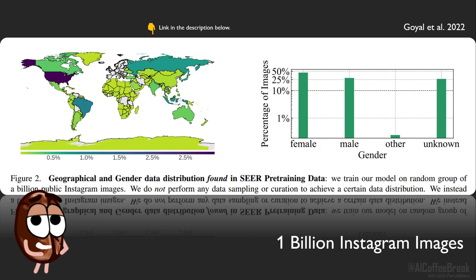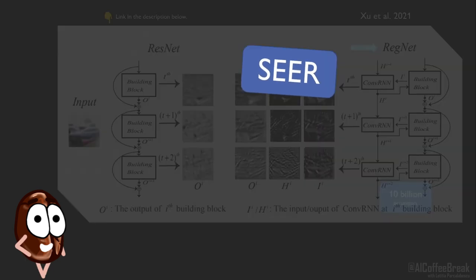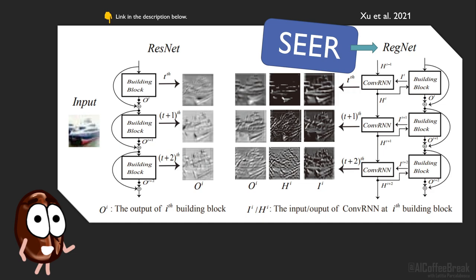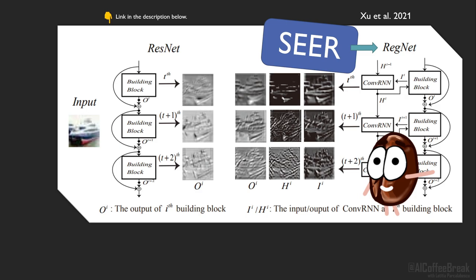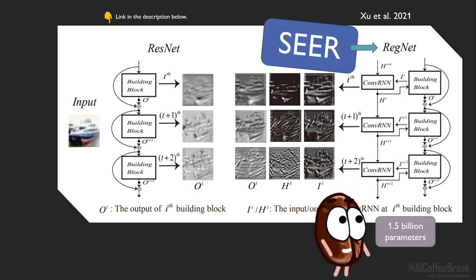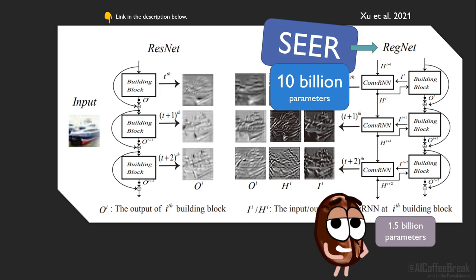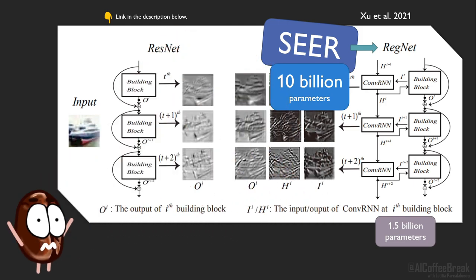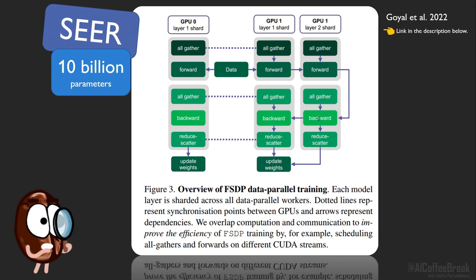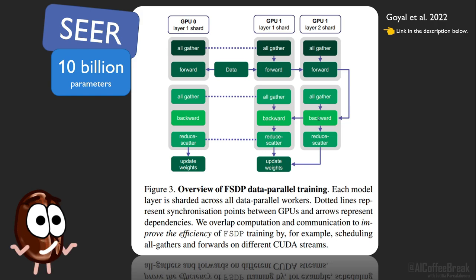The authors decided to ditch dataset curation and still hope for fairness. They trained a model called SEER, which is just a RegNet architecture. RegNet is a variant of the well-known ResNet, where the residual connections are regulated by a recurrent neural network. The previous biggest model in the RegNet family was only 1.5 billion parameters. To not underfit the data, the model size should match or surpass the dataset size, so the authors scaled up the RegNet to make SEER — a RegNet model scaled to 10 billion parameters. Just imagine the necessary engineering work to parallelize this on a cluster. You can read a lot of details in the paper about how they pre-trained the model on 496 Nvidia A100 GPUs. This paper covers the hardware aspect far more extensively than usual papers.